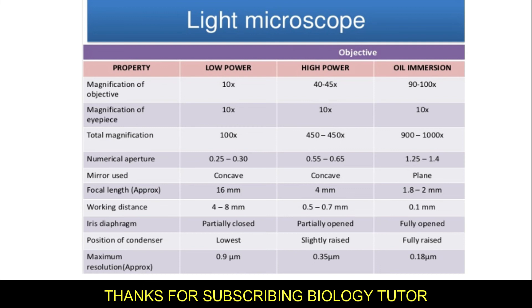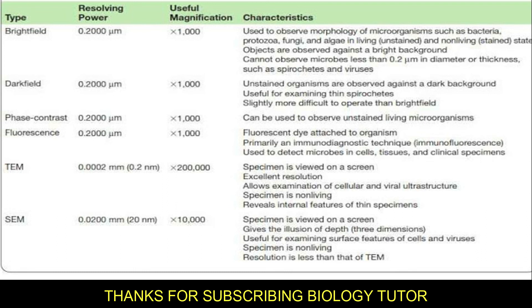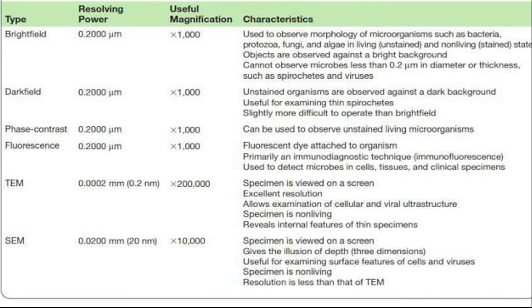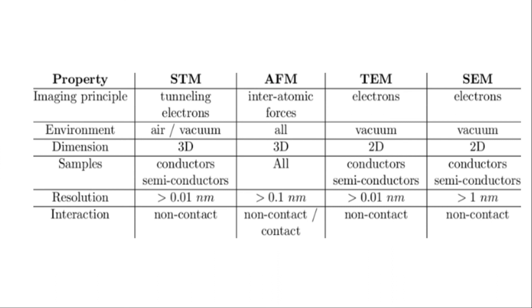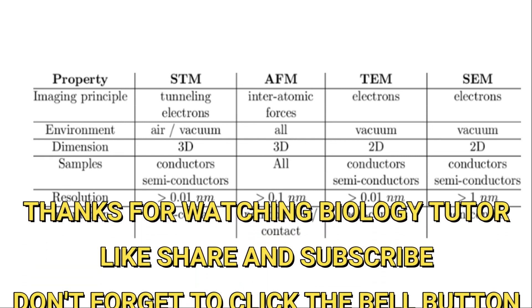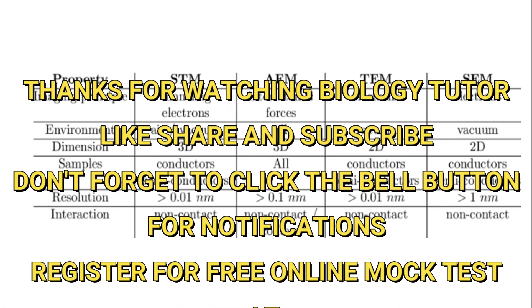Go through this before going to the exam — it is very very important. Next: bright field, dark field, phase contrast, fluorescence, and other types. You have to learn the magnification and resolving power. Also learn the properties of scanning tunneling microscopy, atomic force microscopy, transmission electron microscopy, and scanning electron microscopy — remember key points like resolution and dimension.